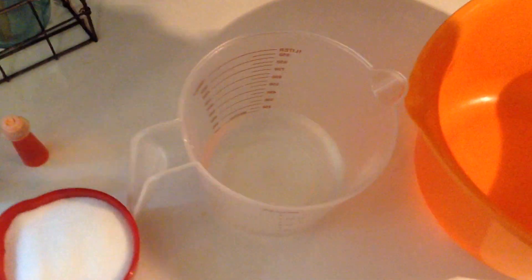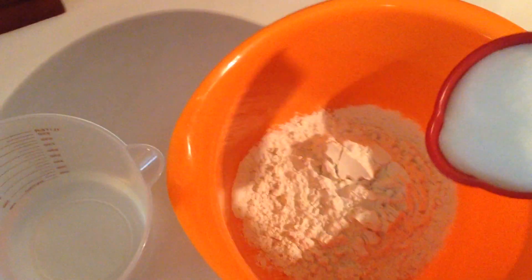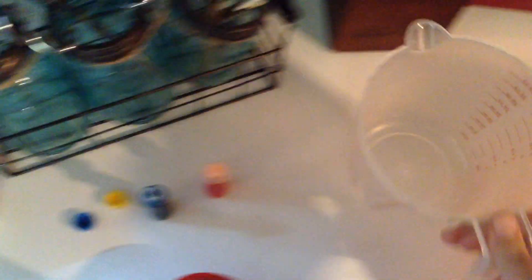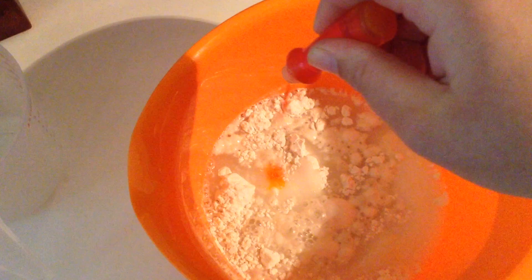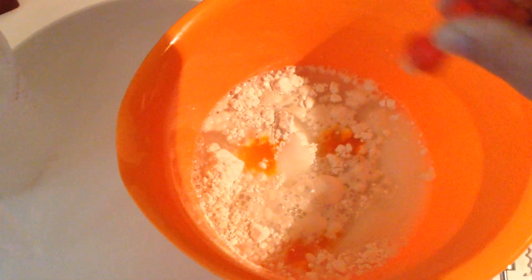I already measured these out. I'm going to dump the cup of flour in, the cup of salt in, then I'm going to pour the water in, and I'm going to use yellow food coloring because that's our color for the month.